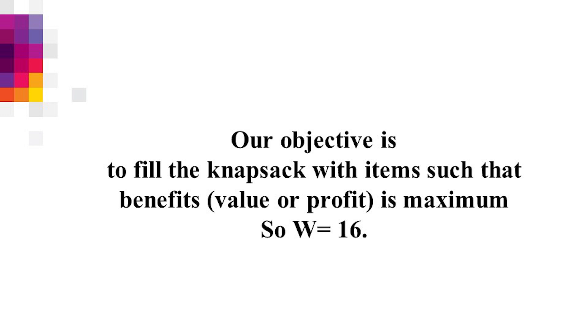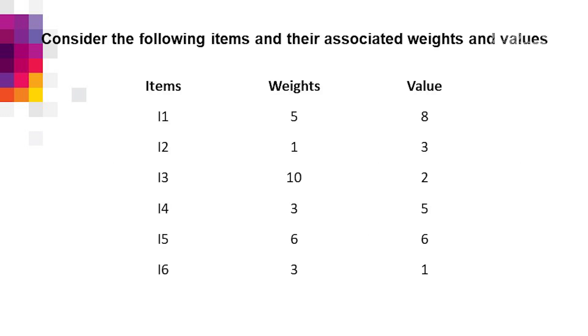The 6 items have weights W1 through W6: 5, 1, 10, 3, 6, 3 respectively. Their values V1 through V6 are: 8, 3, 2, 5, 6, 1 respectively. Our aim is to minimize the weight and maximize the profit.